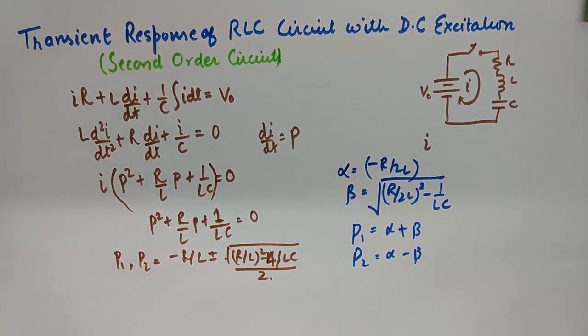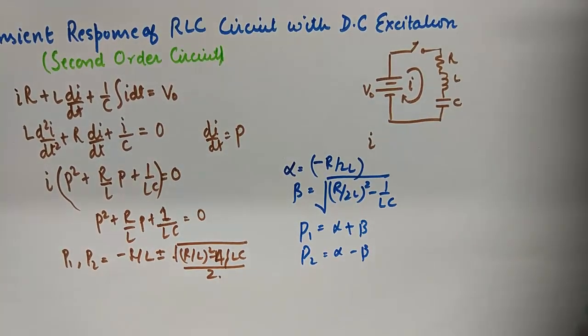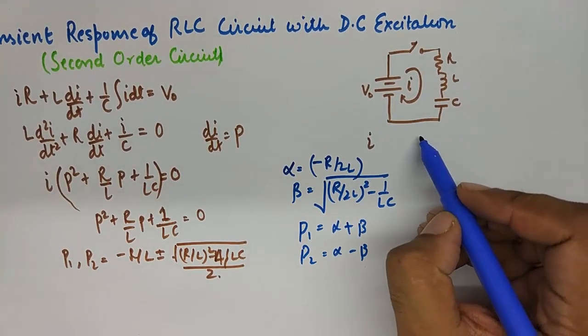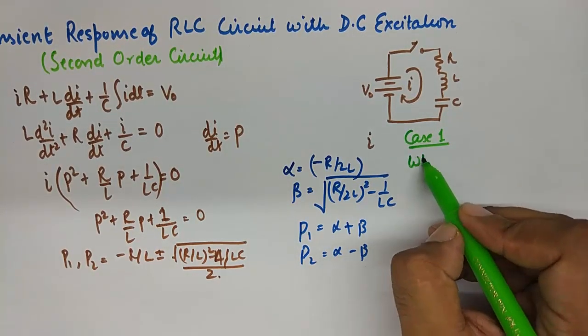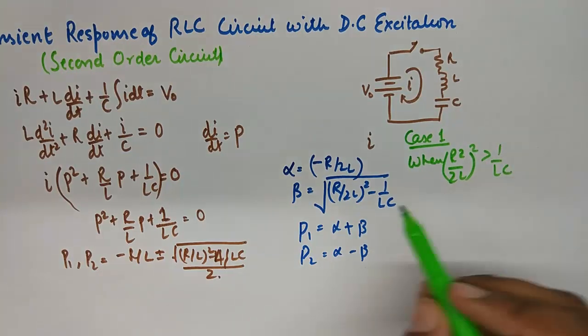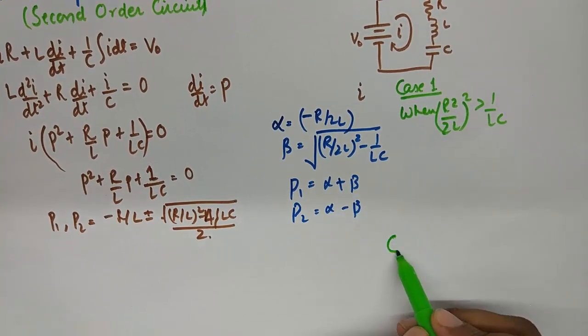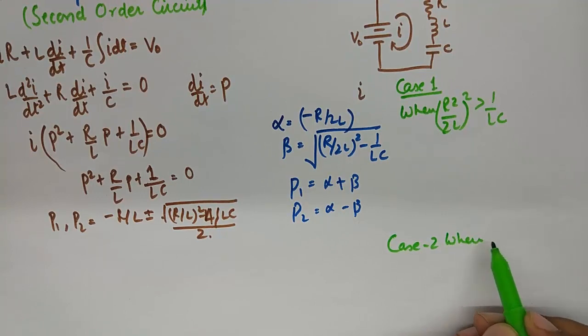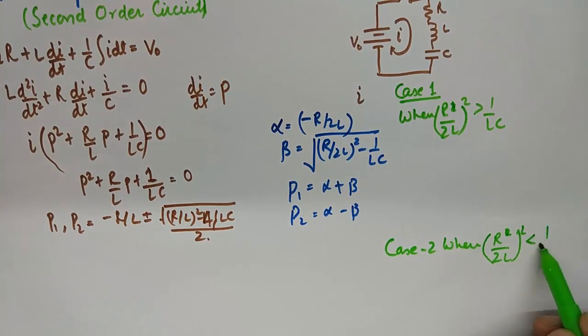So now, once we do that, we'll end up having three cases that you need to understand. Case number 1 will be the case when R square upon 2L square will be greater than 1 upon LC. So this term will be real quantity, it will be positive real.